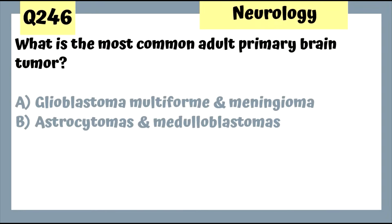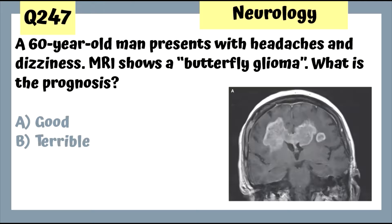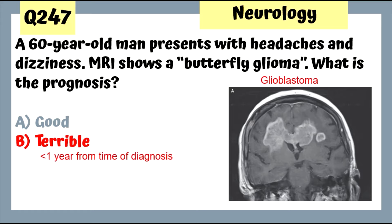Question 246: The most common adult primary brain tumors are glioblastoma multiforme and meningiomas; the other two common types are in children. Glioblastoma multiforme shows the butterfly pattern crossing the midline. Question 247: Glioblastoma multiforme — the butterfly glioma — has a terrible prognosis with death often within one year from diagnosis.